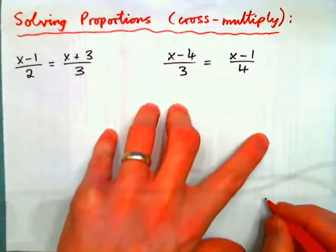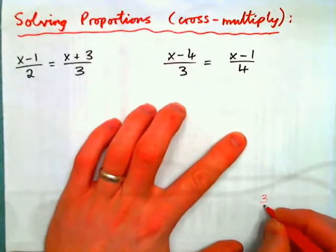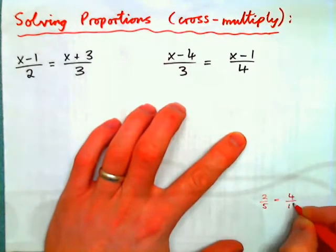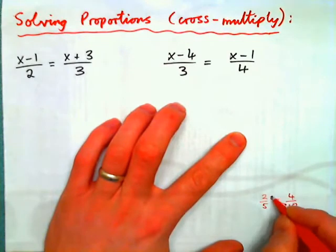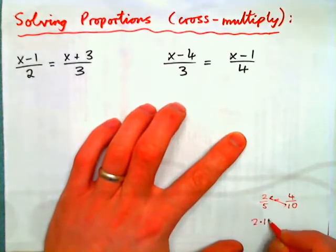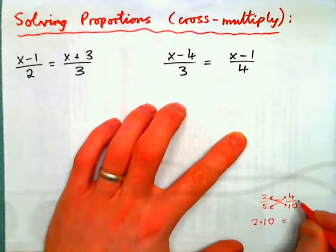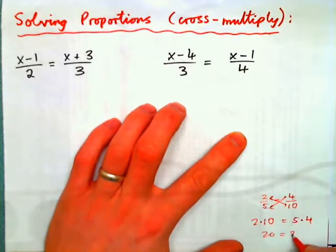And just to remind you why that is okay, 2 fifths is the same as 4 tenths, isn't it? And if I was to cross multiply, I would get 2 times 10 equals this times this, 5 times 4. Or 20 equals 20.